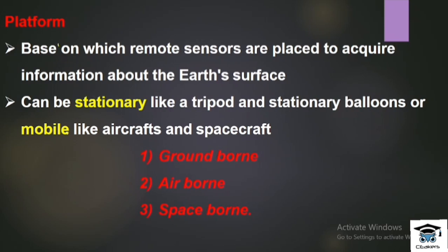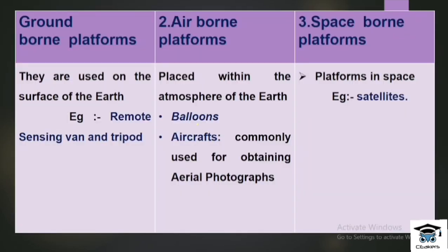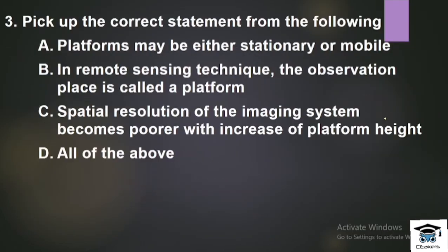A platform can be stationary or mobile. Platforms are of three types: ground-borne, air-borne, and space-borne. In remote sensing, the observation place is called a platform — that is correct. The spatial resolution becomes poorer with increase of platform height — so all of the above is the correct answer.